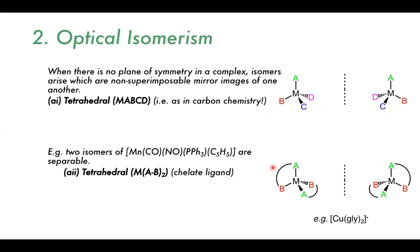Another type of tetrahedral optical isomerism involves two bidentate ligands where the attachment sites are different. For glycinate — an amino acid — one end attaches through nitrogen and one through oxygen. Depending on how they attach, you get different isomers, and a mirror image of this is non-superimposable on the original.